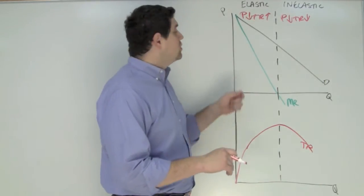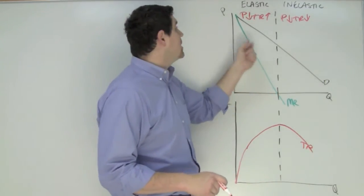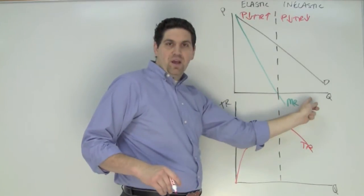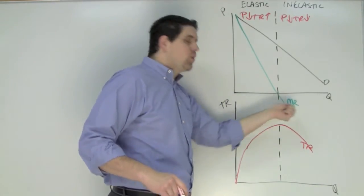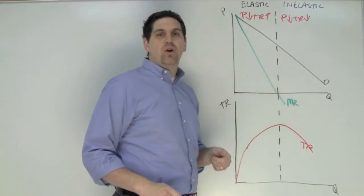Notice a monopoly will always produce when the MR is positive. They are always going to produce in the elastic range. There is no reason to ever produce out here. If they did they should just decrease their output and go back to where the total revenue is higher.